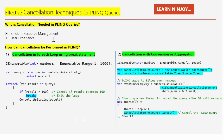Those are the two main important reasons why cancellation is needed in PLINQ queries. Now let's explore how we can perform cancellation. We'll discuss two techniques: number one, cancellation in a ForEach loop using a break statement, and number two, cancellation with conversion or aggregation.